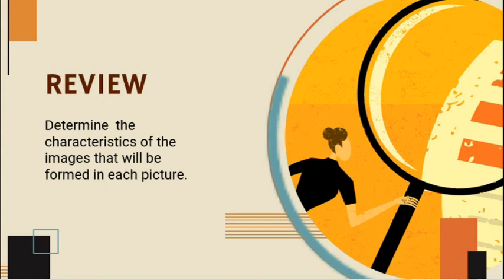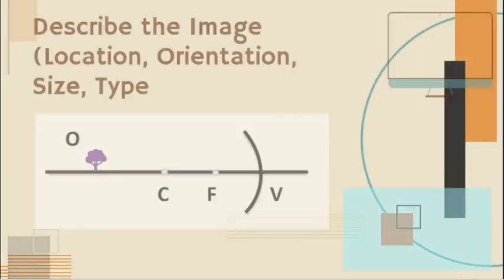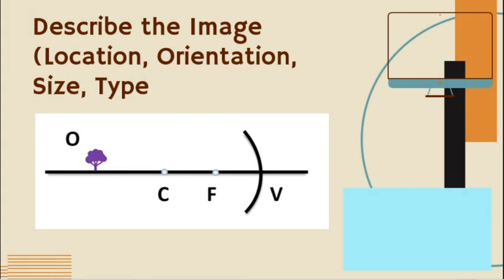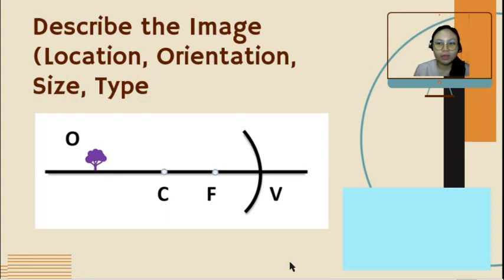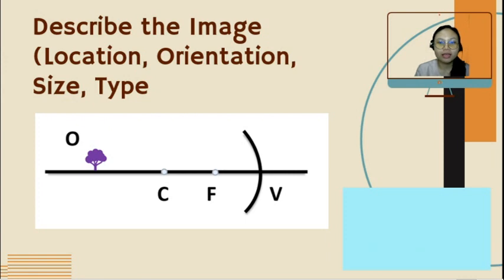Before we proceed to our discussion, we will be having a short review. All you have to do is determine the characteristics of the images that will be formed in each picture. So the first picture: the object is beyond C. Determine the location, orientation, size, and type of the image. You have 10 seconds to write down your answer in the comment section.